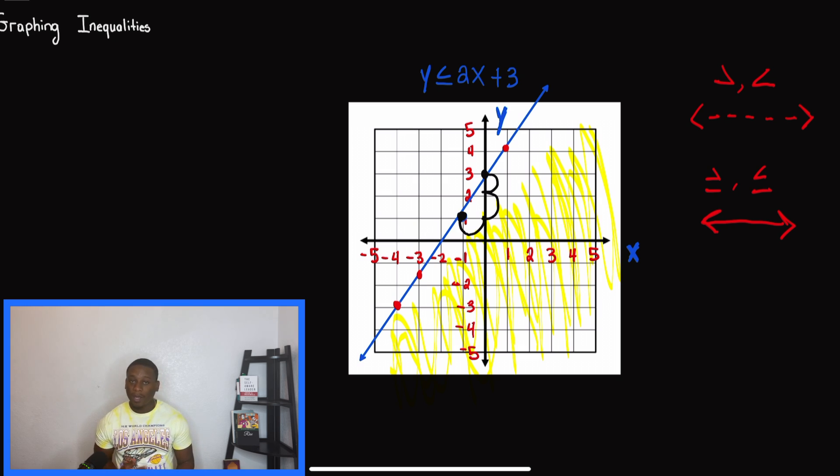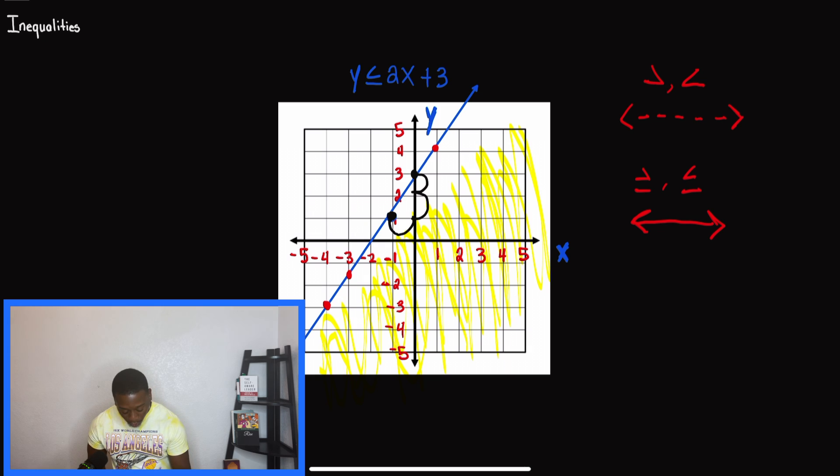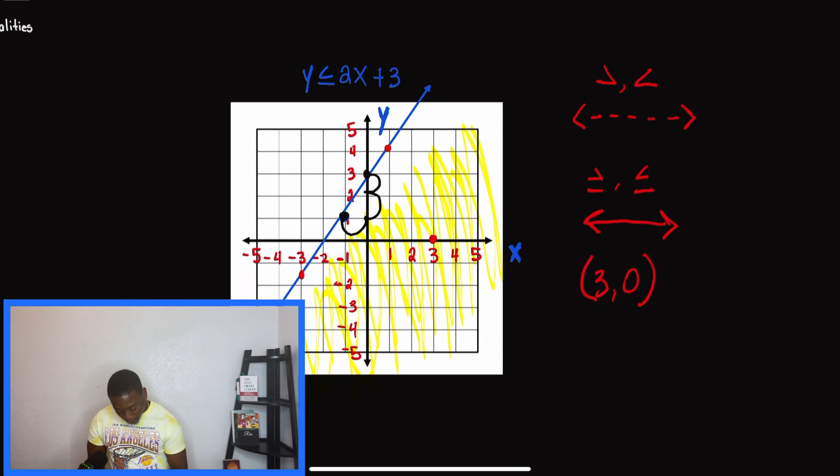What we can do is pick a point. Let's say we pick the point (3, 0). We're going to plug that x and y into our inequality. Zero is y, so we substitute that.